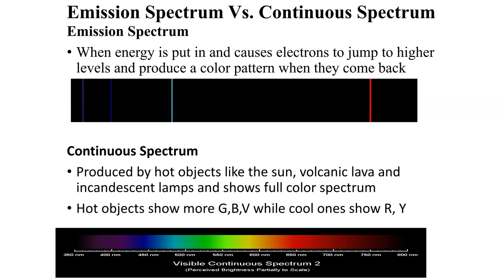Another thing to note: hot objects show more green, blue, and violet, while cooler objects show red and yellow. So if you see a black body emission with more red or yellow, that object is not at as high a temperature. If you see green, blue, and violet, it's at an extremely high temperature. You can actually tell roughly how hot an object is based on the color you're seeing.